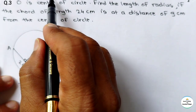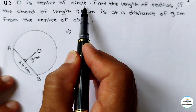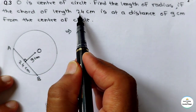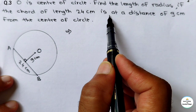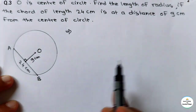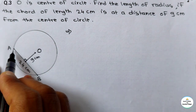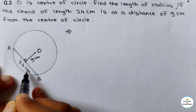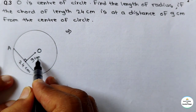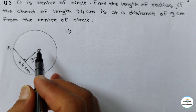See question number 3 for practice set 17.1. The question is: O is the center of the circle. Find the length of the radius if the chord of length 24 cm is at a distance of 9 cm from the center of the circle. So chord AB is 24 cm, its distance from center is 9 cm, and we have to find the radius of the circle.